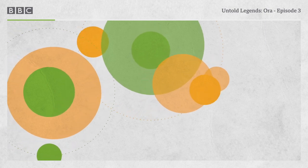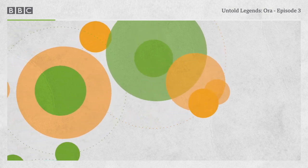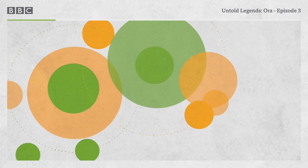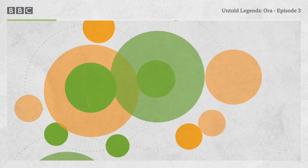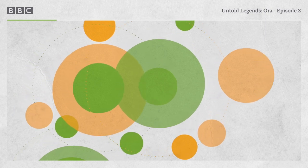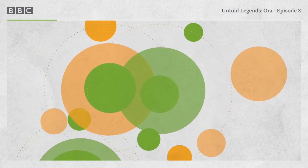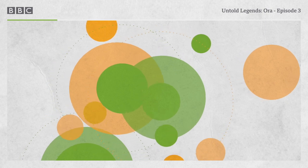From BBC Sounds and the BBC World Service, this is Untold Legends, Ora. I'm Renee Montgomery, former pro basketball player, now co-owner of the Atlanta Dream women's basketball team. Episode 3, Advantage, Ora.